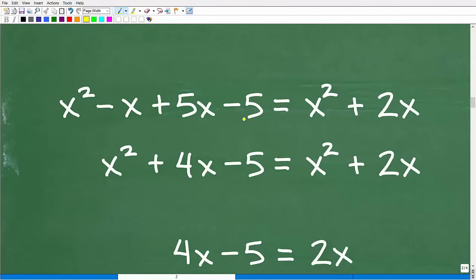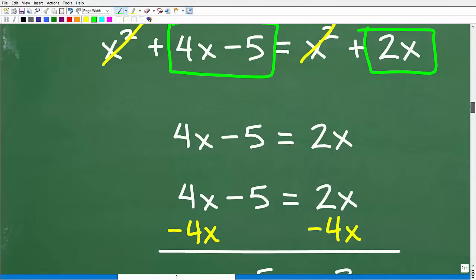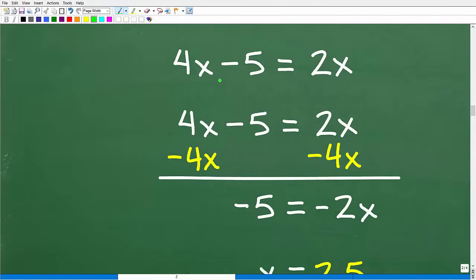So we have x squared minus x plus five x minus five is equal to x squared plus two x. Before we do anything, we want to combine like terms. So now we have negative x plus five x is four x. We have x squared plus four x minus five is equal to x squared plus two x. Some of you might have been alarmed, thinking you have to do quadratic formula. No, this quadratic situation goes away because we have the exact same x squared on both sides. When I subtract x squared from both sides, the x squareds go away. We're left with this lovely basic linear equation. We have four x minus five is equal to two x.